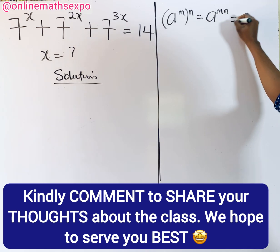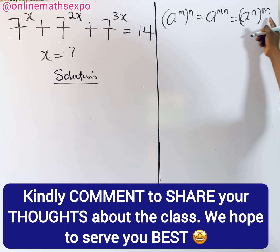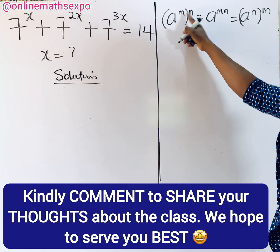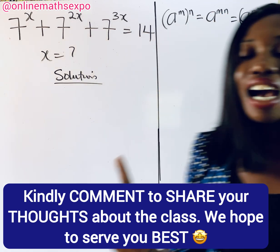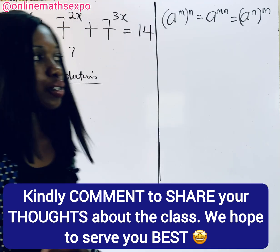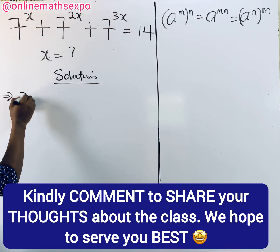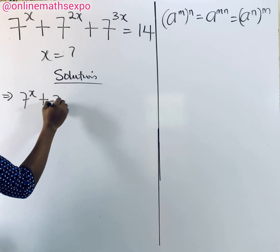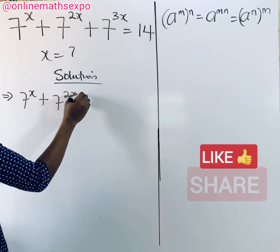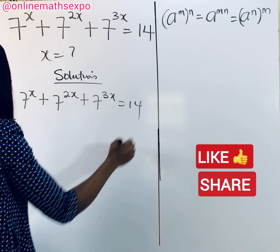It's also the same as a to the power of n to the power of m — you can switch the powers, so these three are the same. Now let's see how that helps us to solve. We have 7 to the power of x plus 7 to the power of 2x, and this is equal to 14.